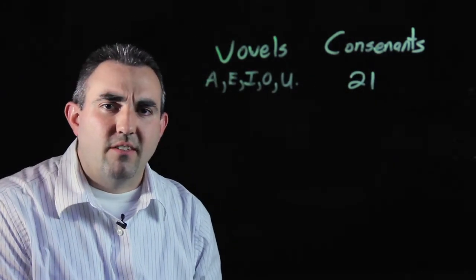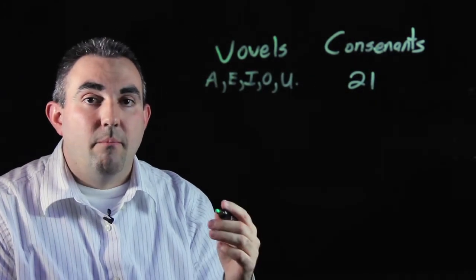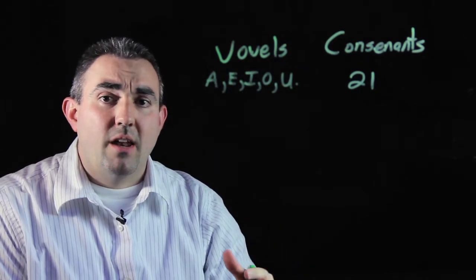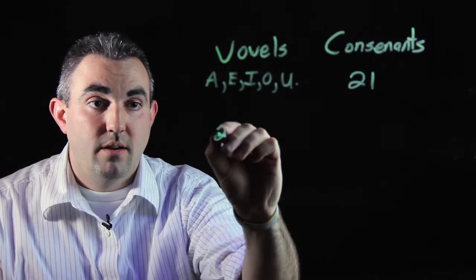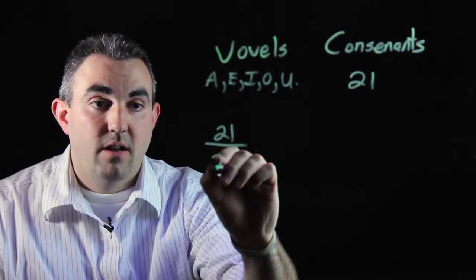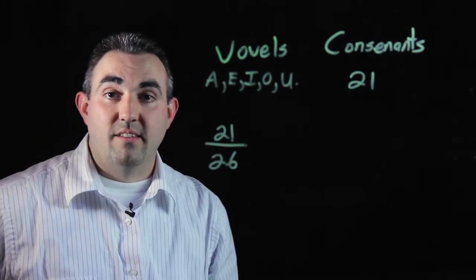Now, let's start making some fractions out of these. Let's discuss how many consonants there are out of the entire alphabet. That would be 21 out of 26 consonants in our alphabet.